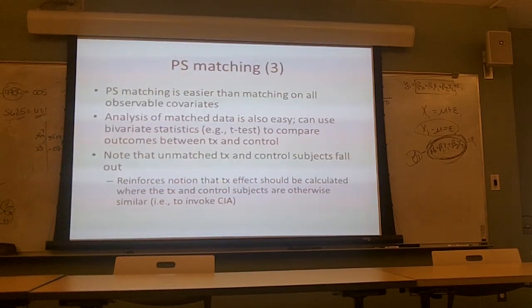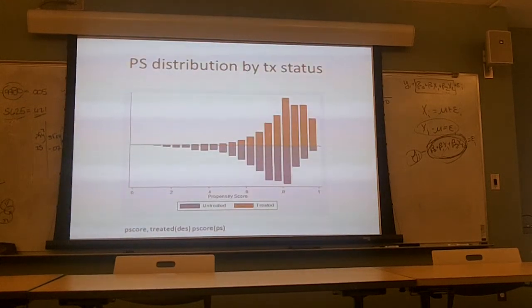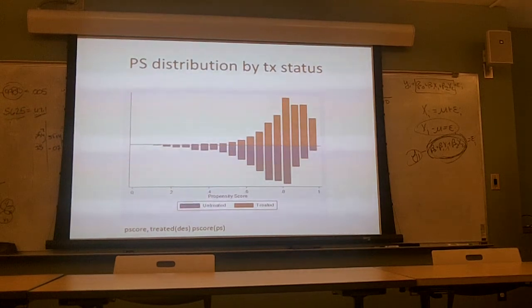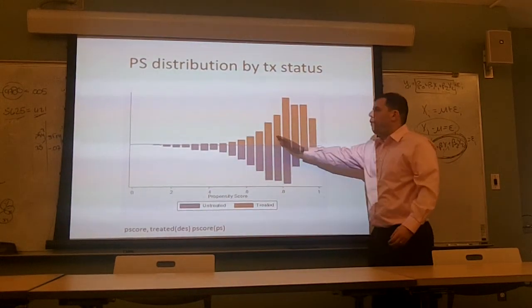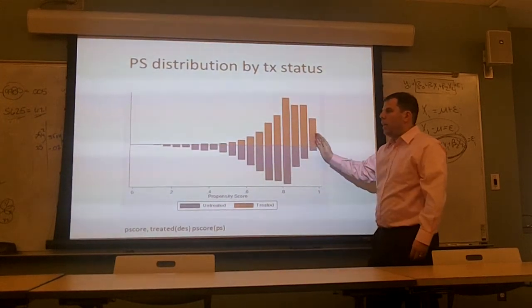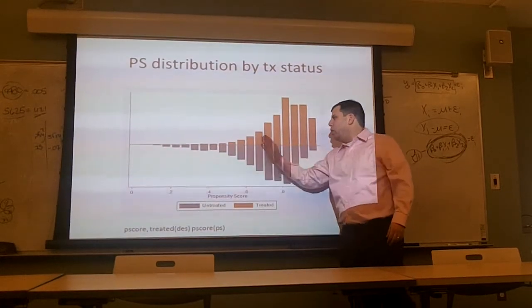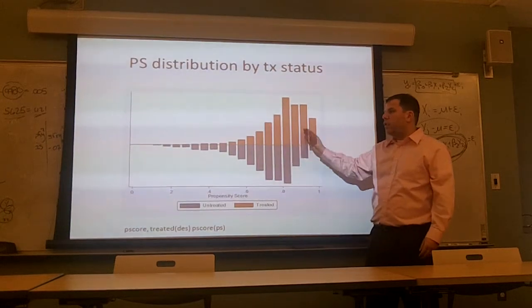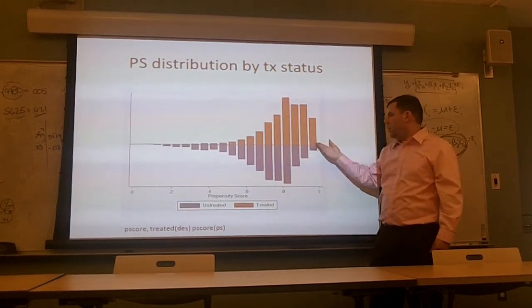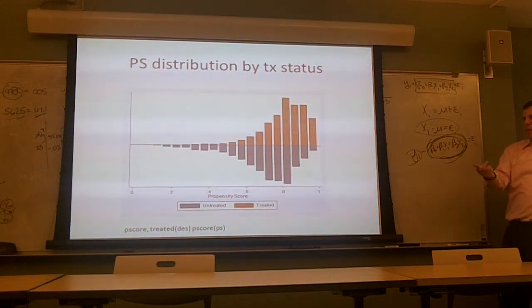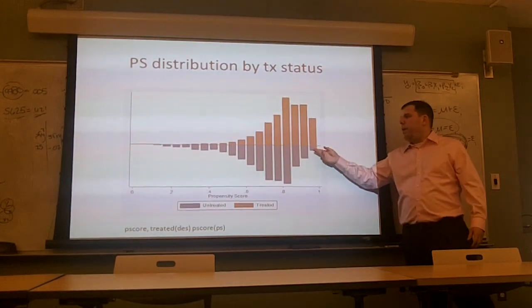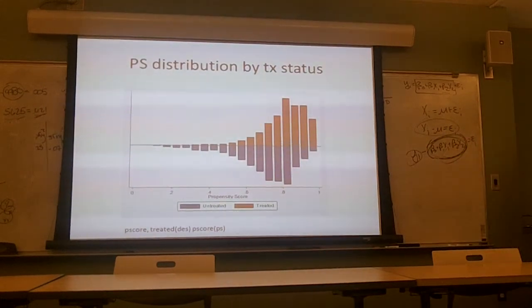Student question: Why do you randomly order treatment subjects rather than going from the top propensity score down? Answer: Randomization is basically like — why not? It protects you from introducing bias. If you start from the top and go down, you may wind up with a sample that's skewed because you start from one side and you're more likely to use up good matches for higher values, leaving worse matches available at the back end. Randomization protects yourself from yourself — the same intuition as in a randomized controlled trial.